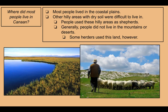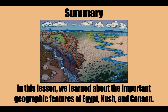Where did most people live in Canaan? Most people lived in the coastal plains — that flatland along the coast. Other hilly areas with dry soil were difficult to live in. In these areas, people used the hills as shepherds, herding sheep and other animals. Generally, people did not live in the mountains or deserts, but some herders would use this land to graze their sheep. In conclusion, in this lesson we learned about the important geographic features of Egypt, Kush, and Canaan.